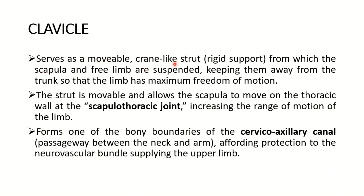It serves as a movable, crane-like strut — a rigid support from which the scapula and free limb are suspended, keeping them away from the trunk so that the limb has maximum freedom of motion. The strut is movable and allows the scapula to move on the thoracic wall via the scapulothoracic joint, increasing the range of motion of the limb. This physiological joint enables elevation, depression, protraction, and retraction of the scapula.